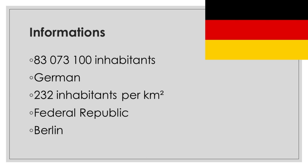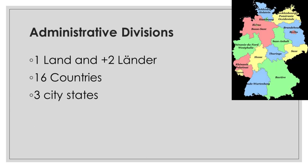Germany is a federal republic. The capital of Germany is Berlin. Germany has 16 states, including 3 city-states like Berlin or Hamburg.